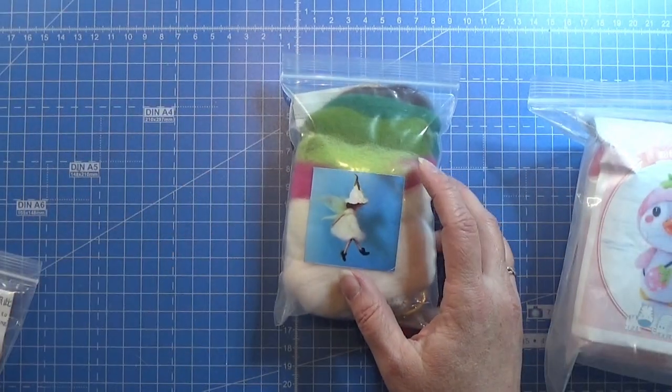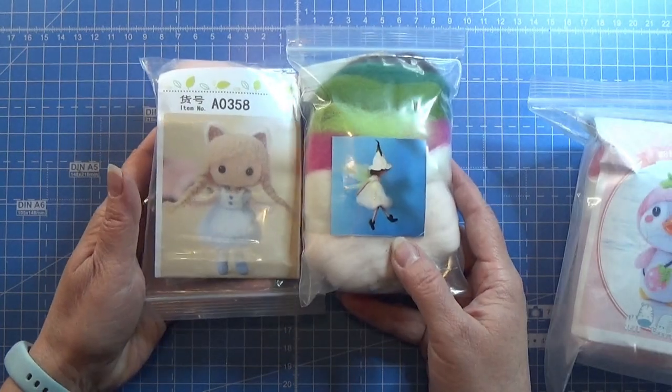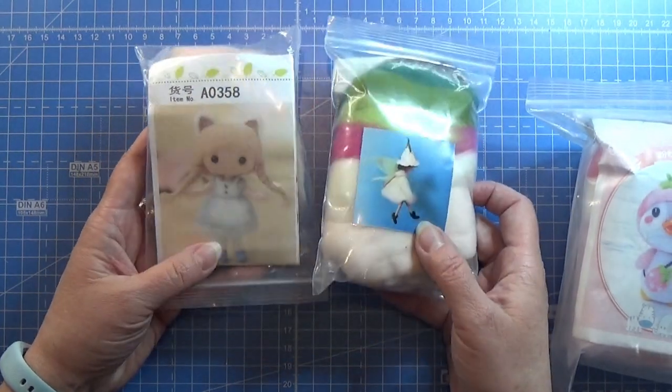And then I got this little flower girl and the little kitty girl here, because I think I could use some ideas from these sets for making small tiny dolls in one to twelve scale.